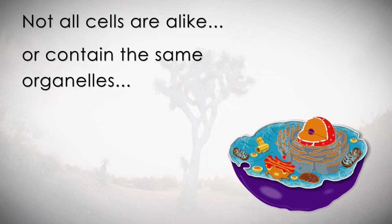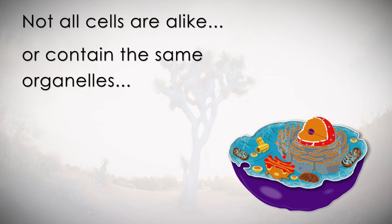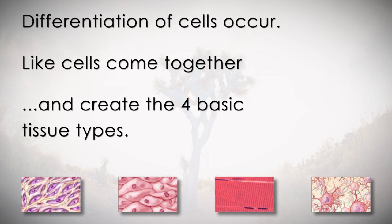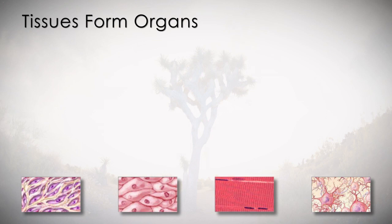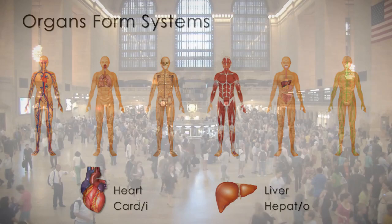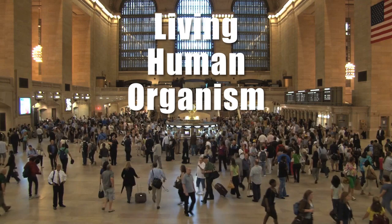Not all cells are alike, or contain the same organelles, or even continue reproducing, as you will later learn as we move through the various organ systems. The differentiation of cells occurs, and like cells will come together and create the four basic tissues for the human organism. These tissues will further become more specialized to form organs such as the heart or the liver. These organs will come together, working cooperatively and uniformly to form organ systems, working in harmony to produce what scientists have labeled as the living human organism.